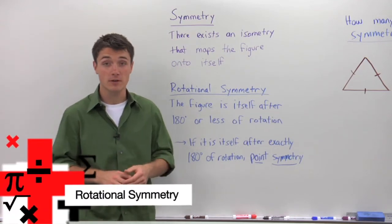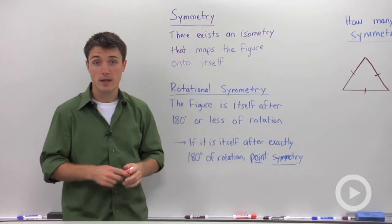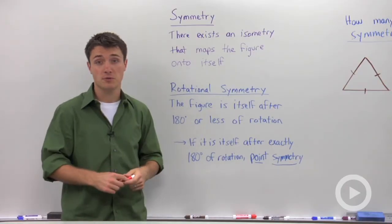In geometry, we can look at a figure and say that it has symmetry if there is an isometry that will map part of the figure back onto itself.